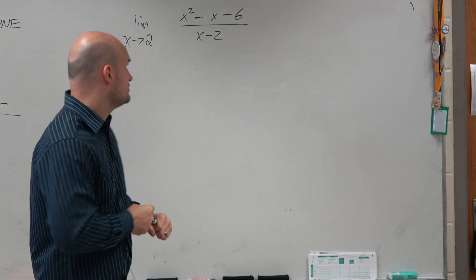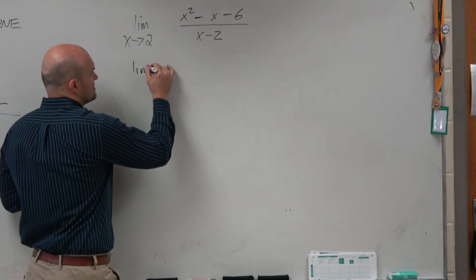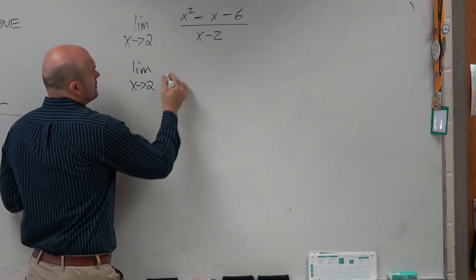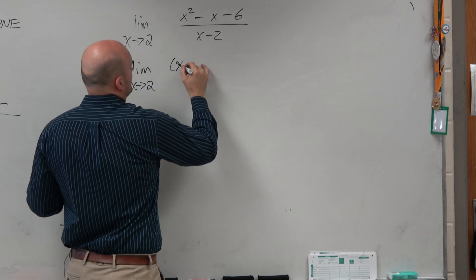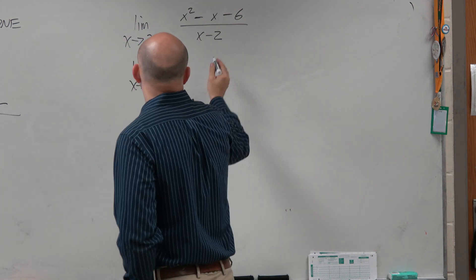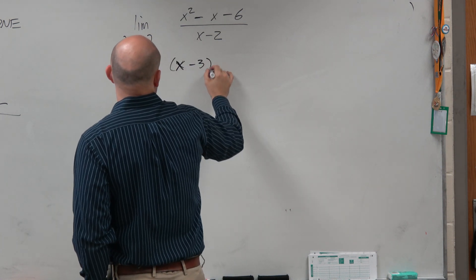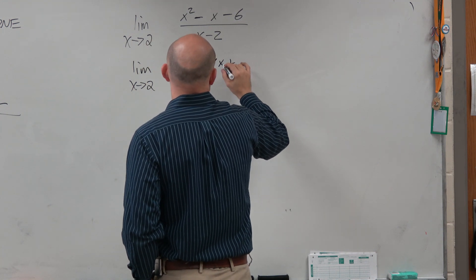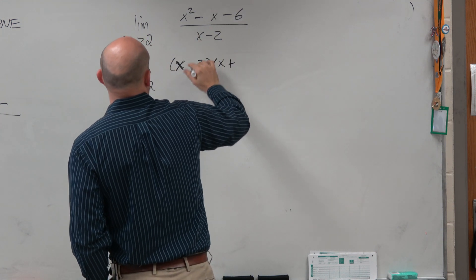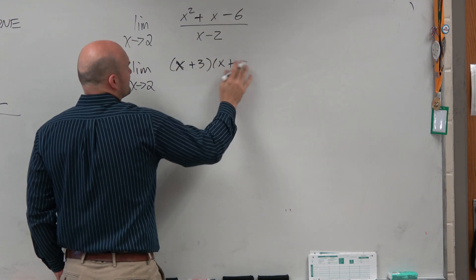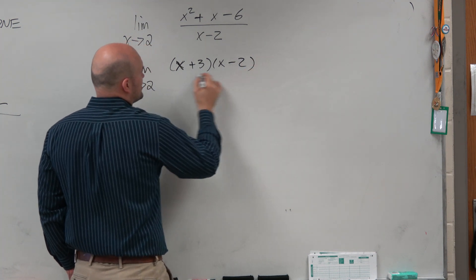Yeah, we can obviously factor the numerator and denominator, right? So I can rewrite this. So I can do this as x minus 3 times x plus... I'm sorry. Dang it, that's supposed to be a plus. Sorry, I had to change that last minute.